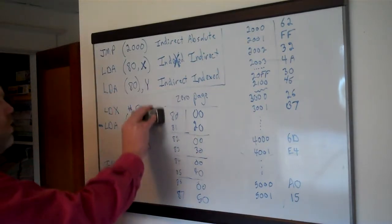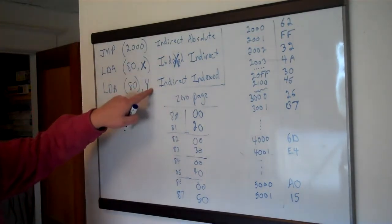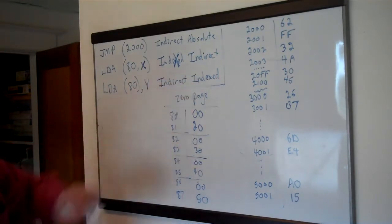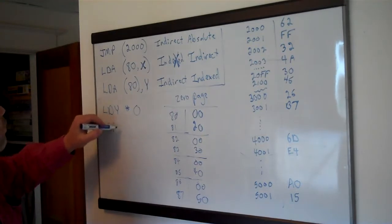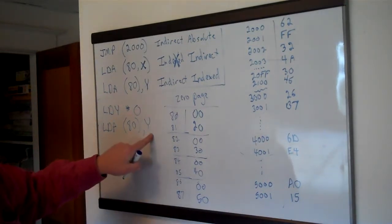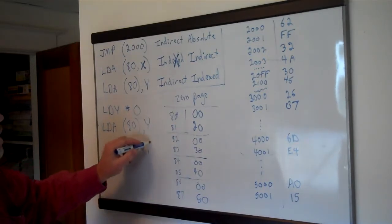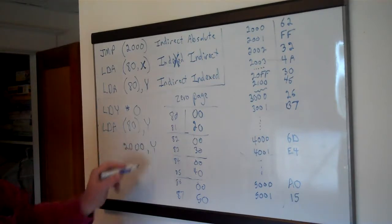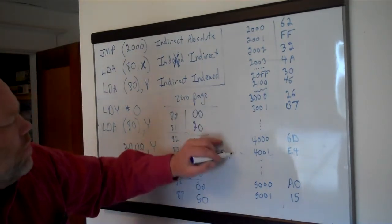Let's move on to the one we actually use quite a bit — the indirect indexed, or Y indexing. Sometimes this one is called X-indirect, sometimes Y-indirect, just based on which register you use. In this one, the indirection comes first and then the indexing. Let's give basically the same example but with Y: load Y with zero, load A from (80),Y. This time we do the indirect part first before adding Y. We go to 80, get address 2000 — low byte first, then high byte from 81.